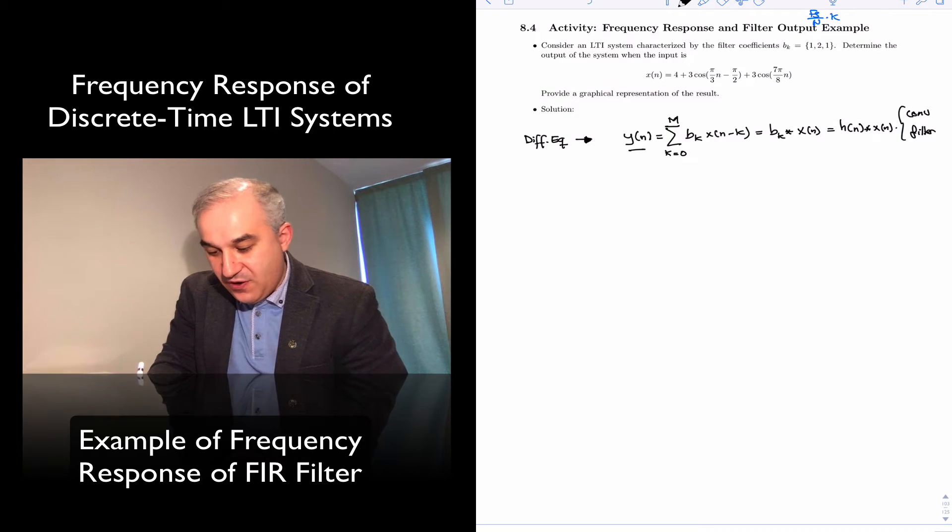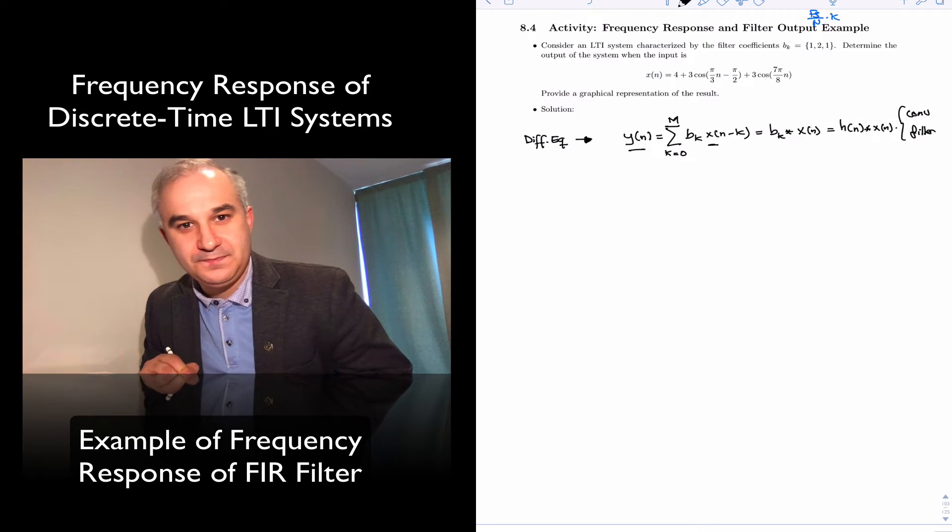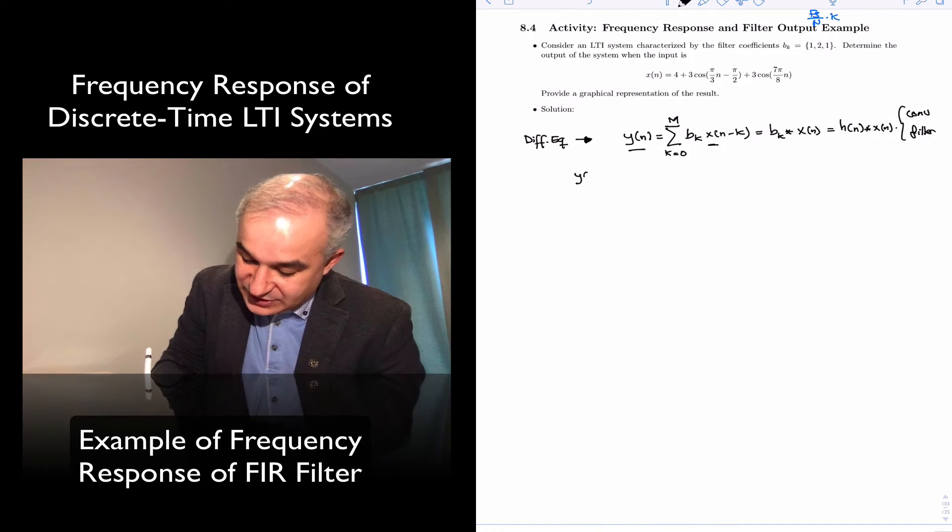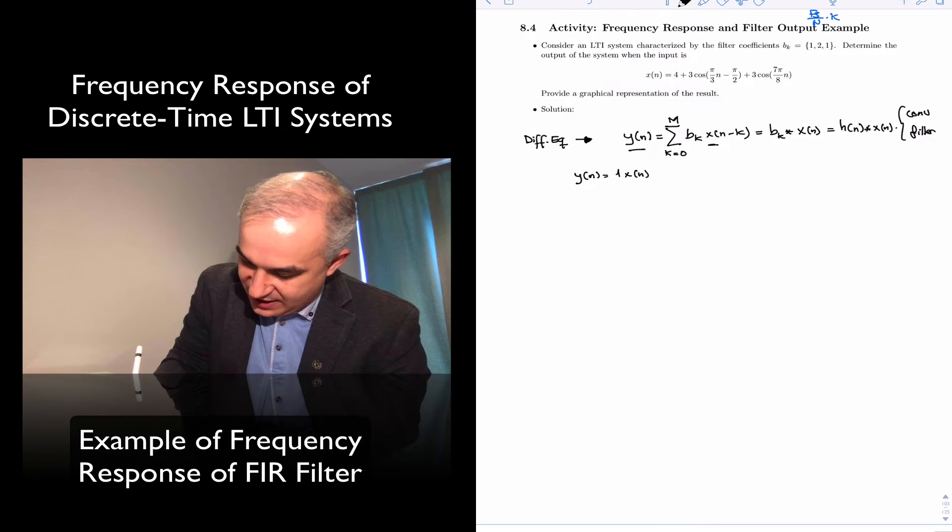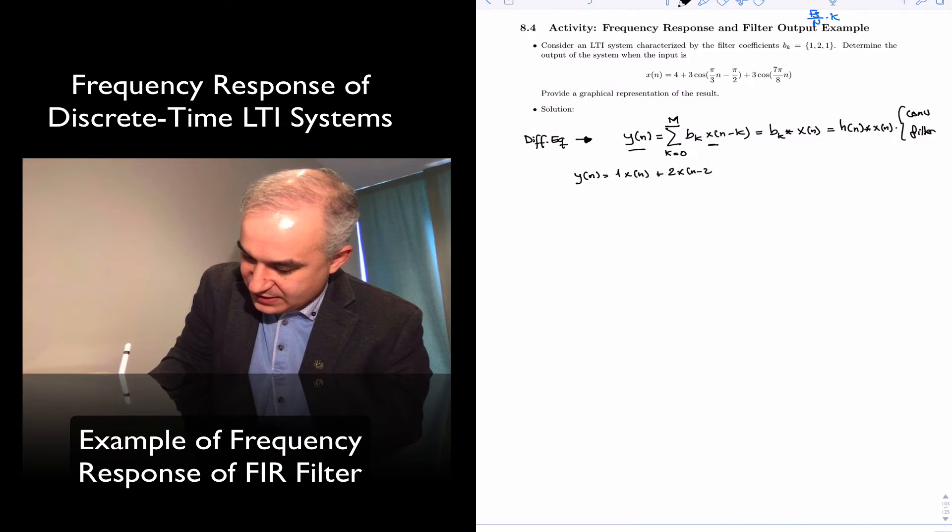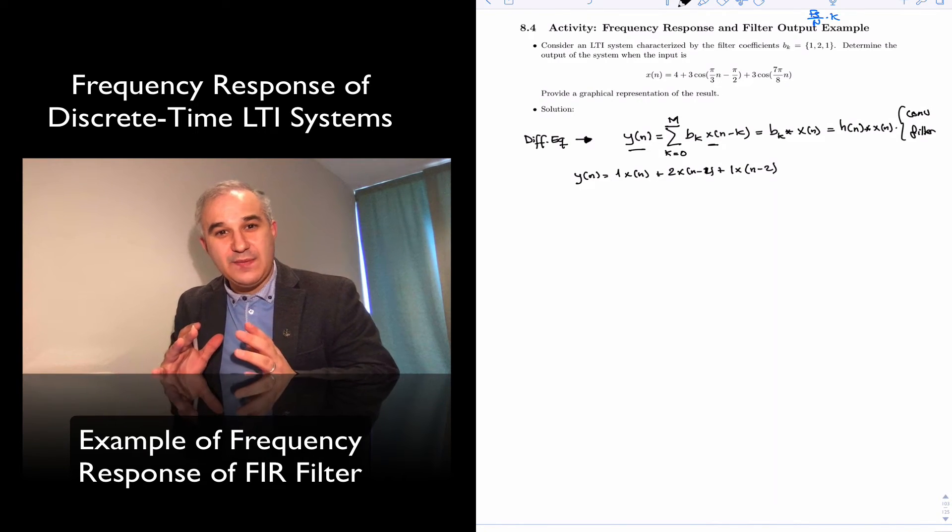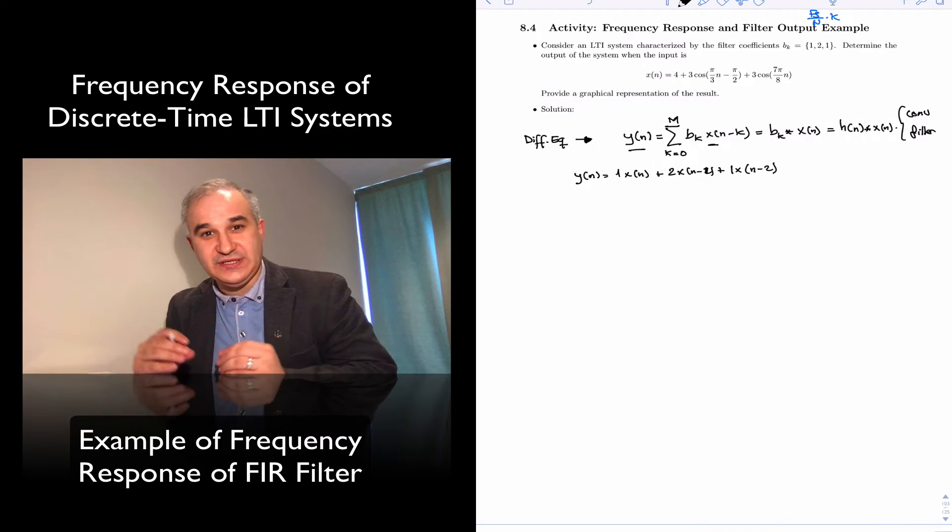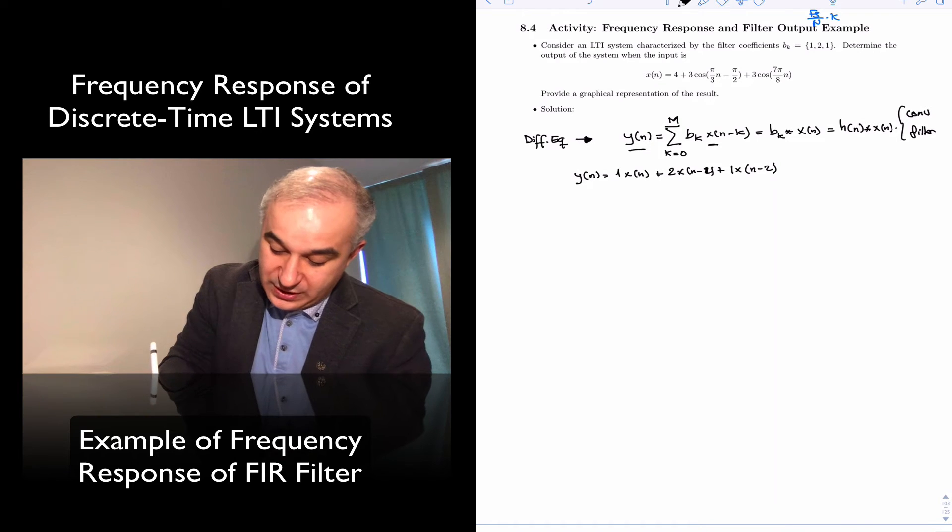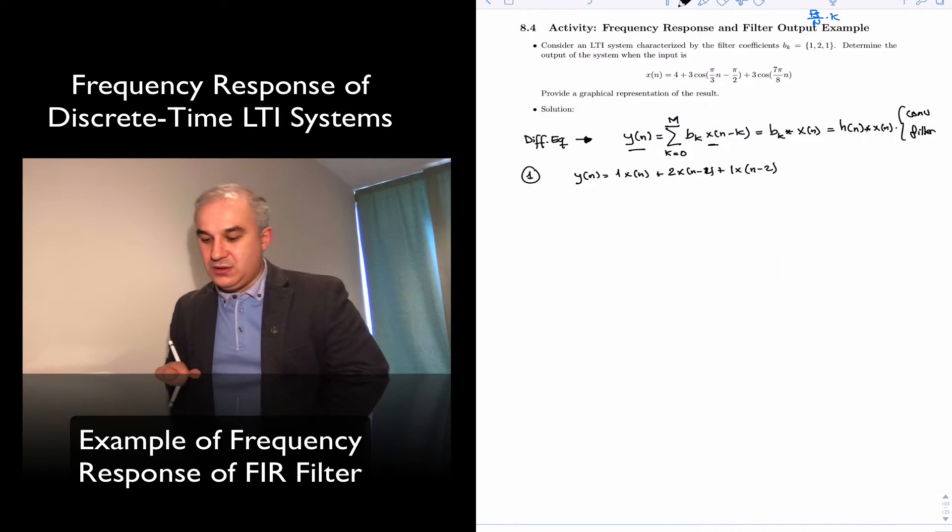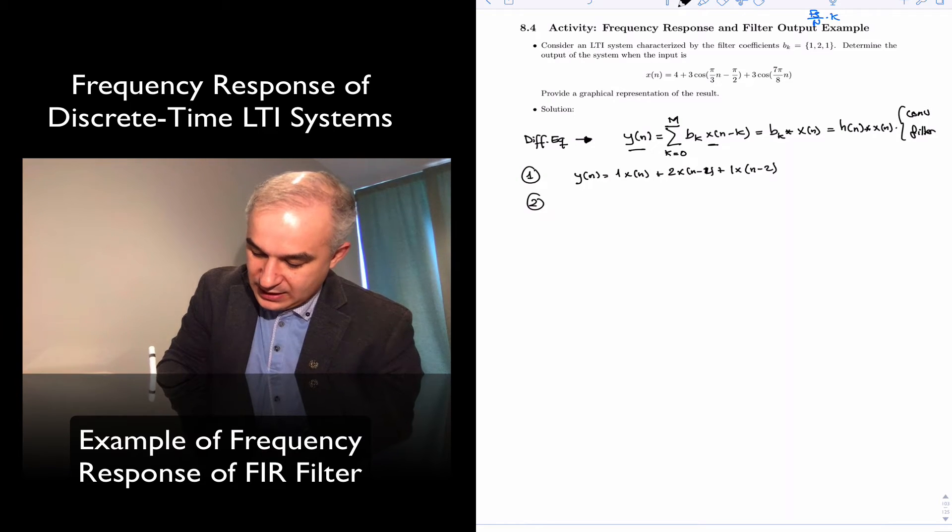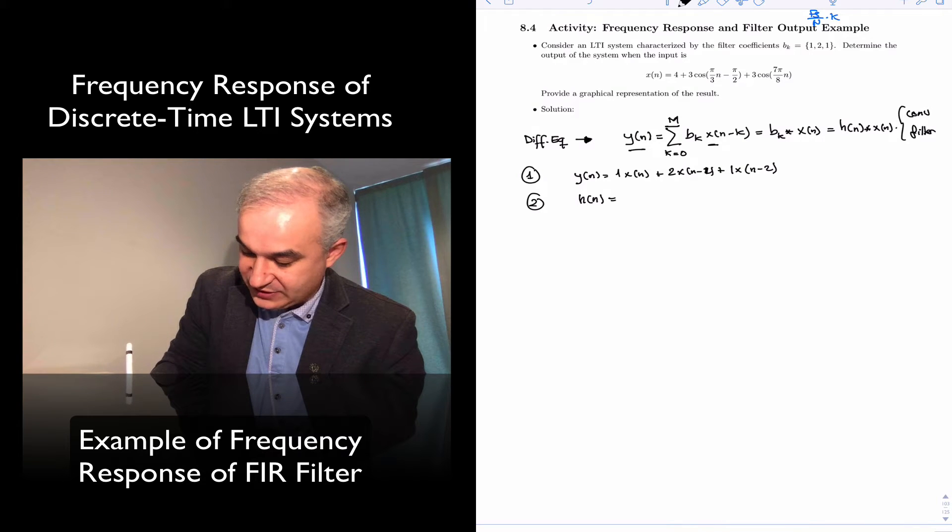In this case, the difference equation, as we saw, was 1 x of n plus 2 x of n minus 1 times x of n minus 2. So this is the time domain definition of the system. This is one way that you can define the system. The other way is with the impulse response, which in this case, equals just the filter coefficients.